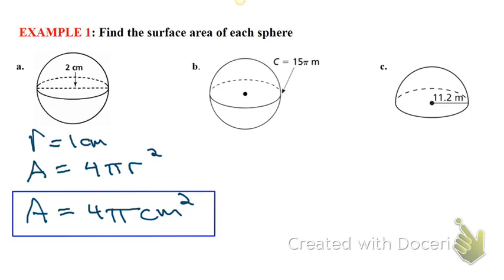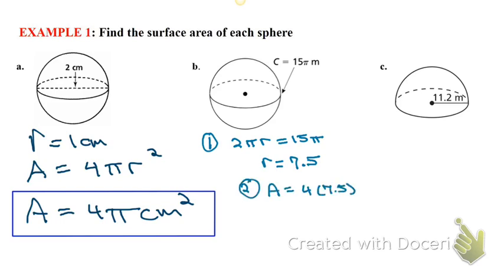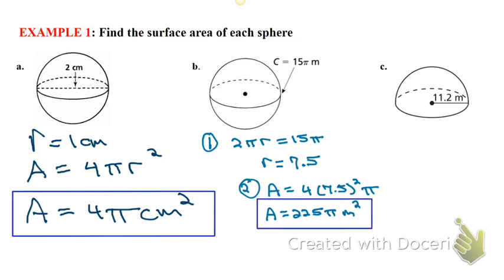In example two, it tells you the circumference of the great circle. So in order to do that, we have to find the radius. We go back to our circumference formula: two pi r. That equals 15 pi. Then we're going to divide by pi — the pi's divide out — and divide 15 by two to get 7.5. Then plug it into the surface area formula: four times 7.5 squared times pi gives you 225 pi meters squared.